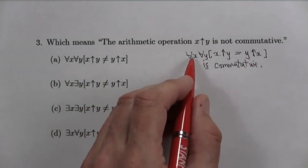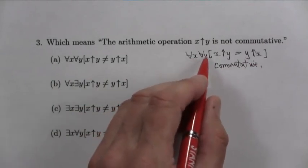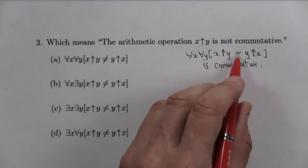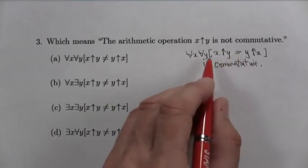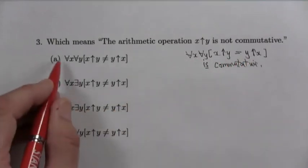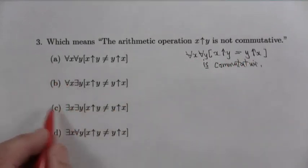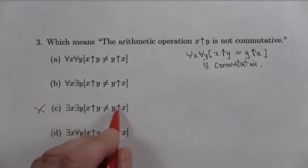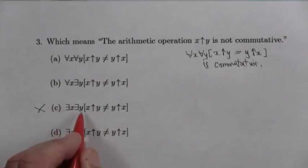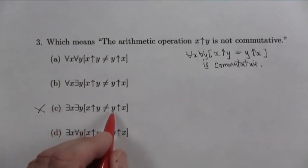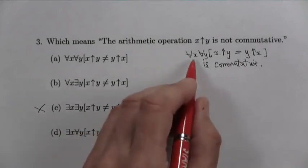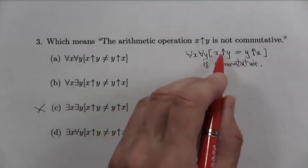And so to say that it's not commutative is to say that there are a pair of numbers x and y for which that's not the case. All we need to show that it's not commutative is to find a single pair of numbers x and y for which we don't have equality. So which one of them does it? It's c. That says there is an x and there is a y for which we'll get inequality. One single pair of numbers will give you non-commutativity.